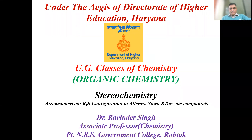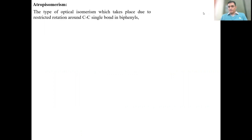Good morning. In today's lecture we will discuss the RS configuration in allenes, spiro compounds, and bicyclic compounds. The term related with these compounds is atropisomerism. Atropisomerism is a type of optical isomerism. By this, we will determine the R and S configuration in allenes, biphenyls, and spiro compounds, but only under some particular conditions.